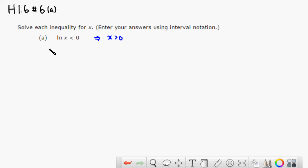Then all you have to do is, to simplify that, I'm going to raise e to both sides. So I'm going to do e to the natural log of x is less than e to the 0. We are using the inverse property.